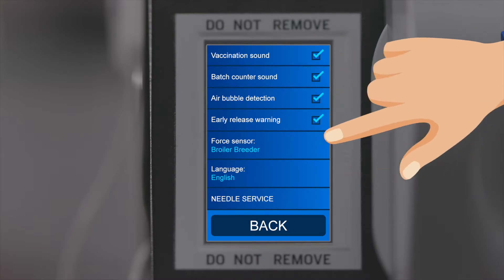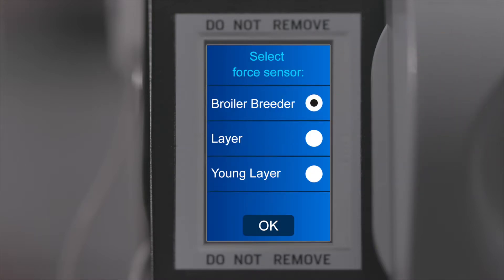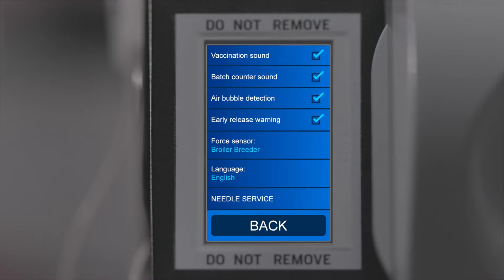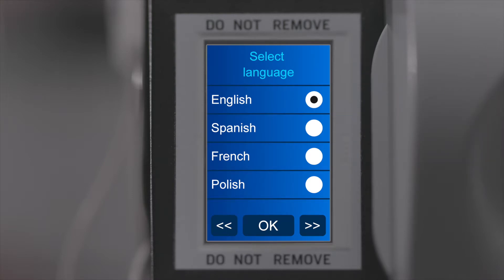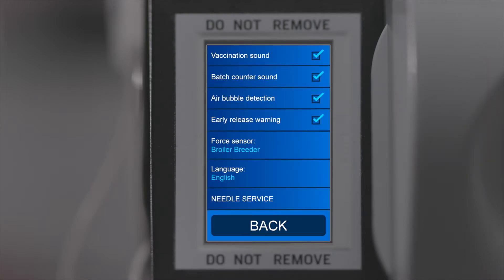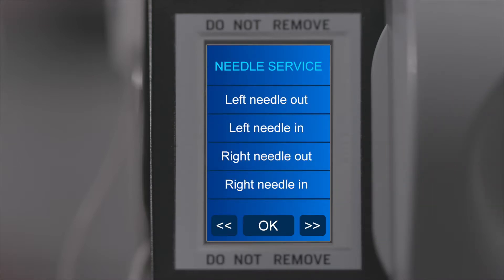Force Sensor: Depending on what type of chickens you are going to vaccinate and which breastplate you use, the Force Sensor needs to be adjusted. Language: You can choose between various languages. Needle Service: Use this function to exchange the needle during operation. This service is only available after first injection.